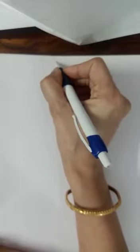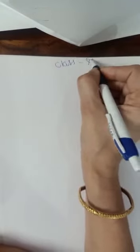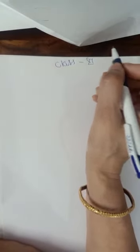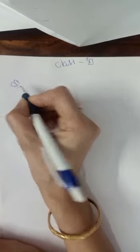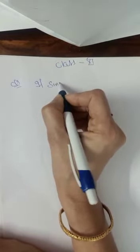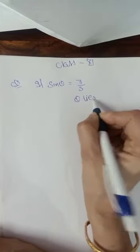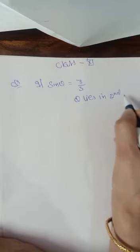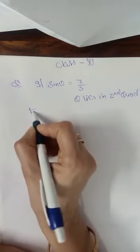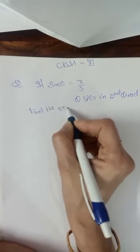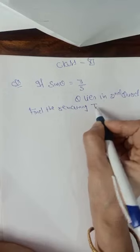Good morning students. In the previous class we discussed the trigonometric ratios, and we know that there are 6 trigonometric ratios. Today we will discuss: if 1 trigonometric ratio is given, how to find the remaining 5 trigonometric ratios? Our first problem — if sin θ = 3/5 and θ lies in the second quadrant, find the remaining t-ratios.